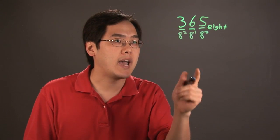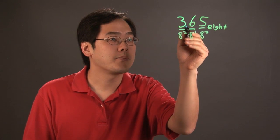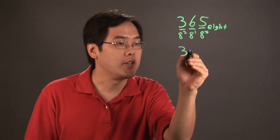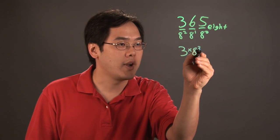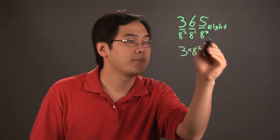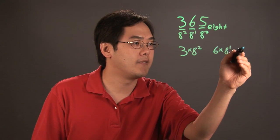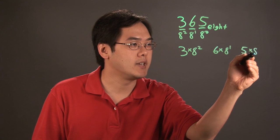Now what you want to do after that is take each place and multiply by the corresponding power. So you take 3 and multiply by 8 squared. You take the 6 and multiply by 8 to the 1st. And then you take 5 and multiply by 8 to the 0.